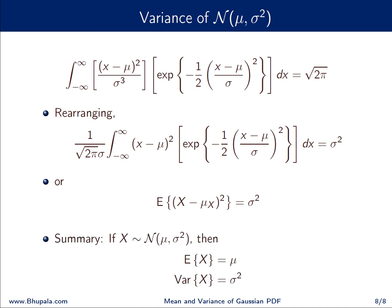As a summary: if X is a Gaussian random variable with parameters μ and σ², then its mean is μ and its variance is σ². That concludes the proof of the evaluation of mean and variance of the Gaussian random variable. Hope you got that — thanks for your time.